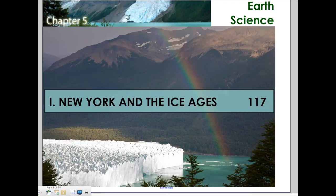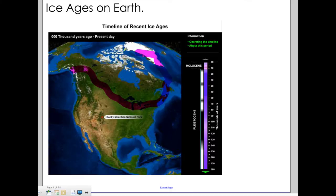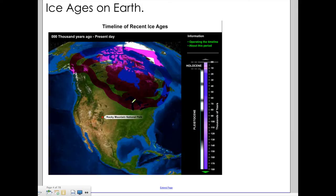This video is going to help us learn about Chapter 5, Section 1: New York and the Ice Ages. Throughout Earth's history we've had several ice ages, where glaciers move in from the north and become an ice sheet, covering huge areas of the Earth's surface. We'll see how an ice sheet covered most of North America in the not so distant past of Earth's history.